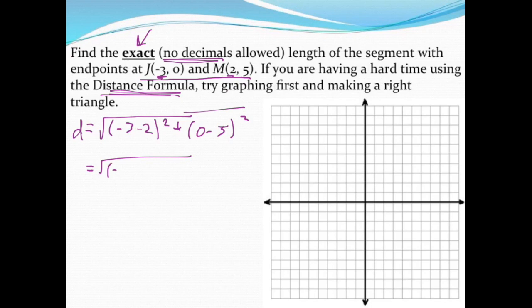Negative 3 minus 2 is negative 5. We've talked about parentheses, and be really careful that your number stays in parentheses. At this point, 0 minus 5 is negative 5.